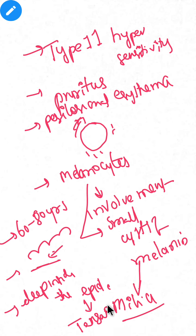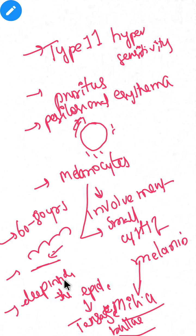A bulla is a type of blister. Blisters are classified into two types based on size: vesicles, which are less than 0.5 centimeters, and bullae, which are greater than 0.5 centimeters. So a bulla is simply a larger type of blister, and in bullous pemphigoid the bullae are tense.